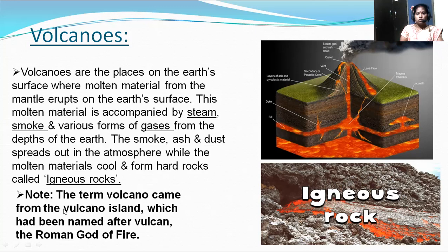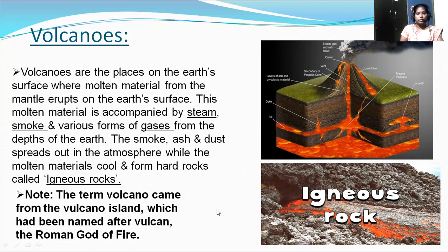The term 'volcano' came from the Volcano Island, which had been named after Vulcan, the Roman god of fire. The eruptions of volcanoes give scope for intrusive and extrusive landforms.